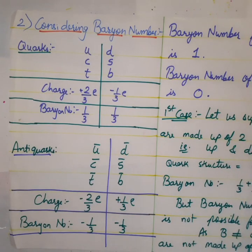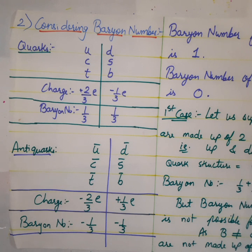In order to prove that mesons have to be made up of a quark-antiquark pair, there were two ways: first, considering the color charge, and second, considering the baryon number. Both methods confirm that mesons must be a quark-antiquark pair.